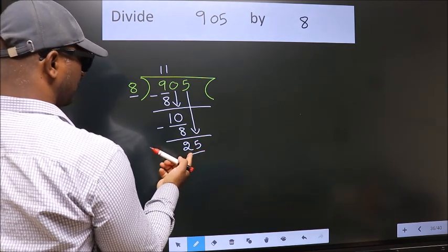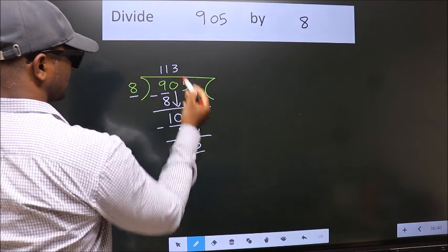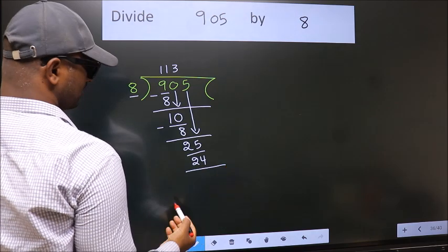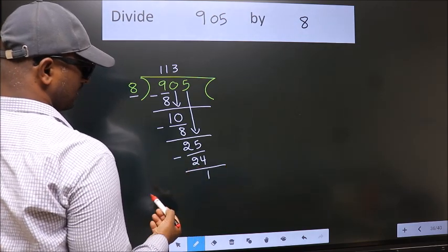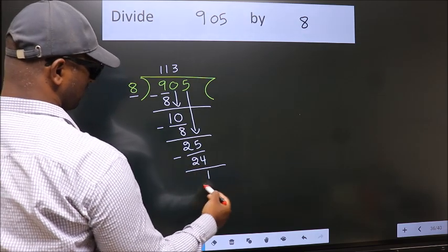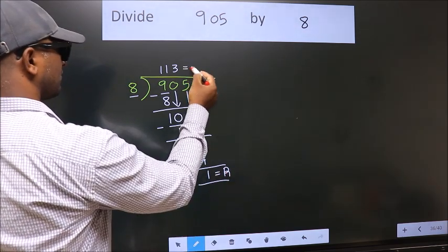A number close to 25 in 8 table is 8 threes, 24. Now, we subtract. We get 1. No more numbers to bring it down. So, we stop here. This is our remainder. This is our quotient.